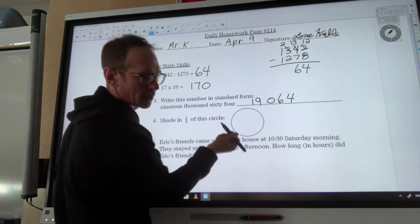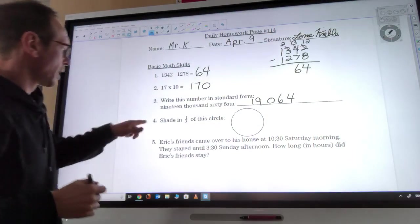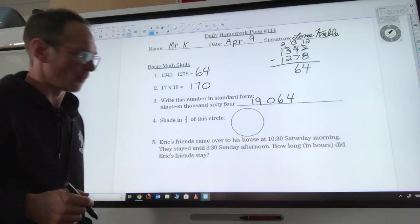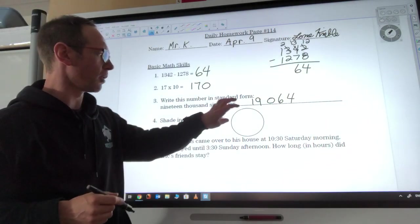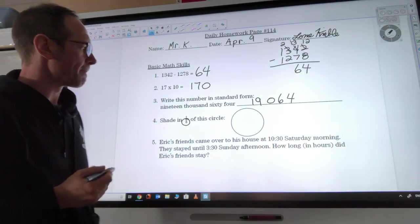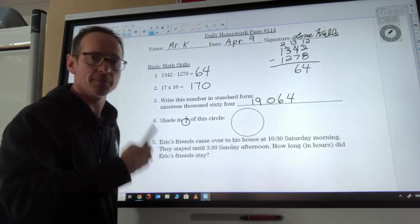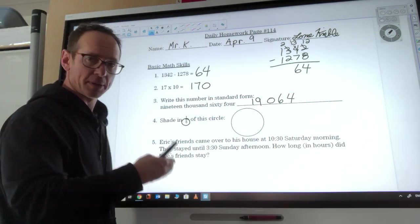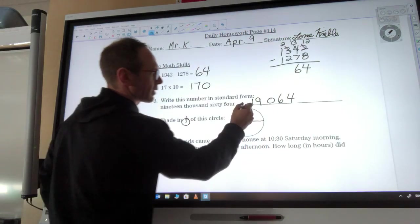Number four says shade in one eighth of this circle. Once again, this eight means how many total parts of the circle we're going to need. Remember that the parts need to be the same. When we go from half to a quarter, we can just split them in half. There's half, and then we can make the quarter. We can split it this way and we still have all our parts even.